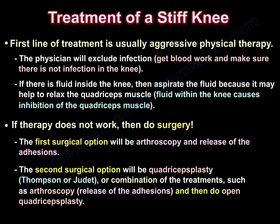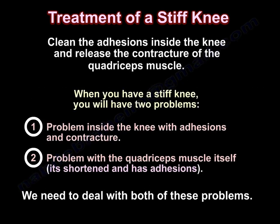If therapy doesn't work, then you will do surgery. The first surgical option is arthroscopy and release of the adhesions. The second surgical option is quadriceps plasty — Thompson or Juday — or a combination of treatments, such as arthroscopy, release of adhesions, and then open quadriceps plasty. So you clean the adhesions inside the knee and release the contracture of the quadriceps muscle.